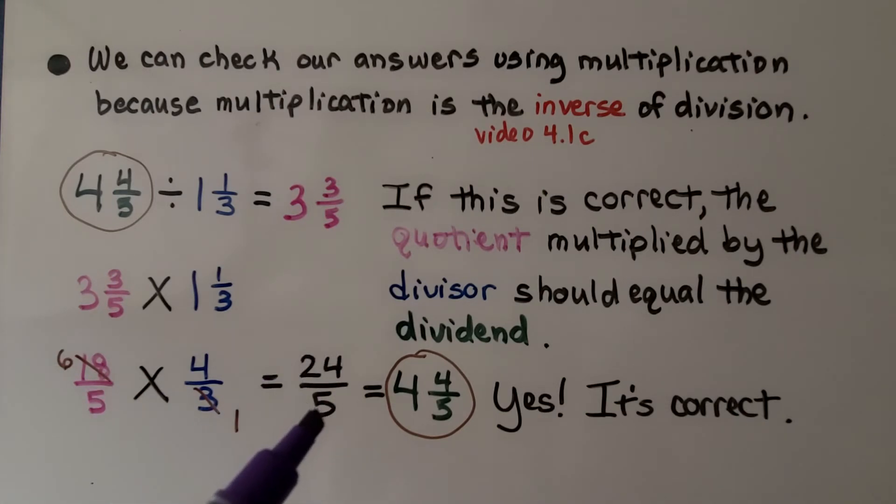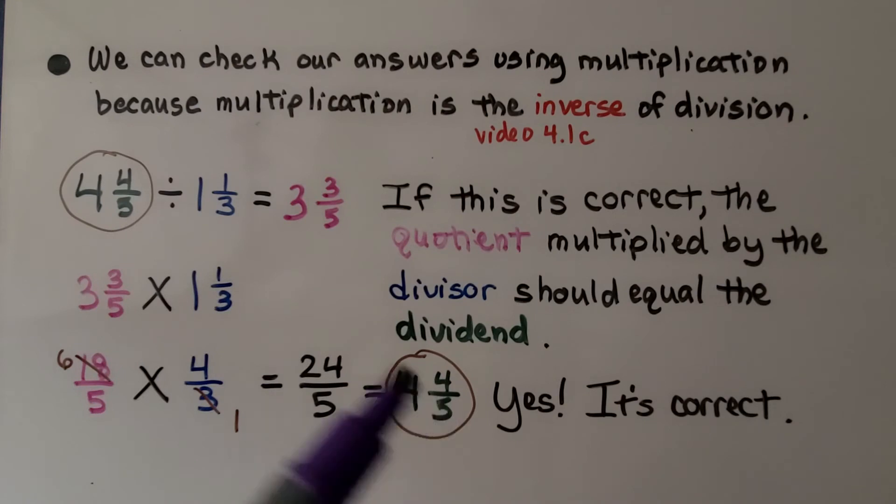And 24 divided by 5, well, that's 4⅘ left over, and it matches our dividend. So yes, it's correct.